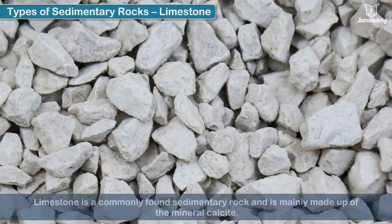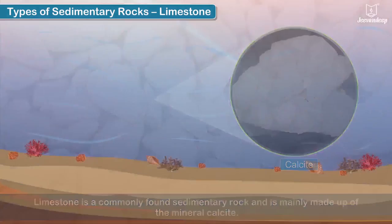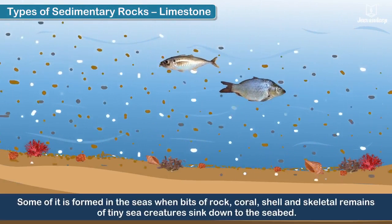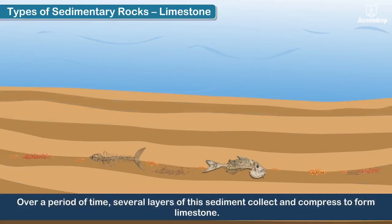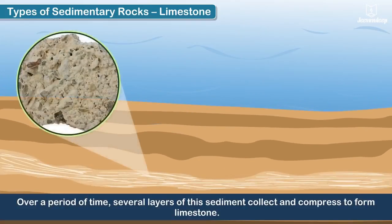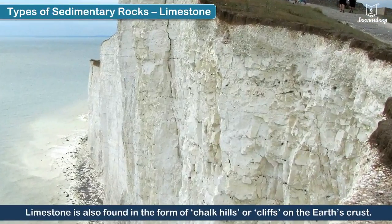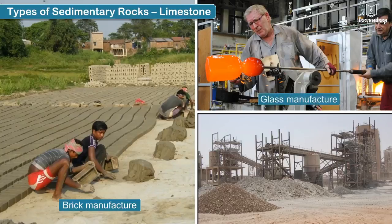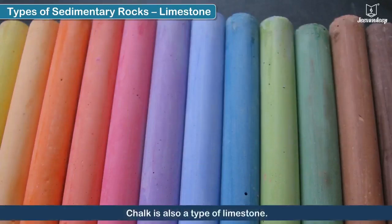Shale is also mixed with limestone to make cement. Limestone is a commonly found sedimentary rock and is mainly made up of the mineral calcite. Some of it is formed in the seas when bits of rock, coral, shell, and skeletal remains of tiny sea creatures sink down to the sea bed. Over a period of time, several layers of sediment collect and compress to form limestone. Limestone is also found in the form of chalk hills or cliffs on the Earth's crust. Limestone is used in making bricks, glass, and cement. The Great Pyramid of Giza is made entirely of limestone. Chalk is also a type of limestone.